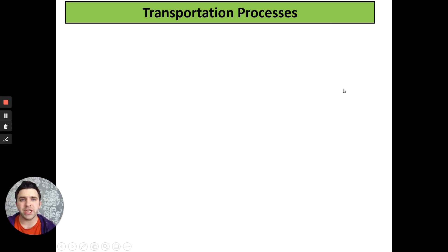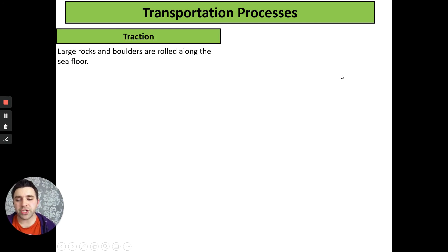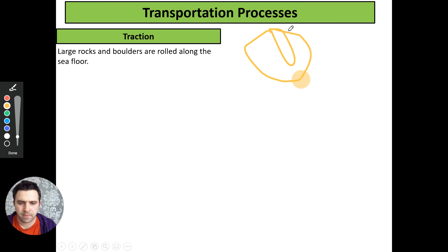Moving on to transportation processes. Traction is where we have large rocks and boulders rolling along the seabed or seafloor. To draw your diagram, here is our very large boulder, just rolling along the seabed. Much like the wheels on a tractor, it's the big bit and it rolls and rolls.